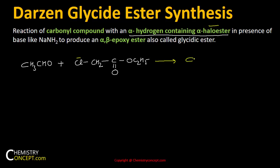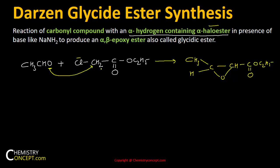So it is an example of an alpha hydrogen containing alpha halo ester. These two react and an epoxide is formed. We get CH3-CH-CH with an epoxide ring and CO2C2H5. This oxygen forms the epoxide with this carbon, with hydrogen and chlorine removed. The reagent used is a strong base like NaNH2.